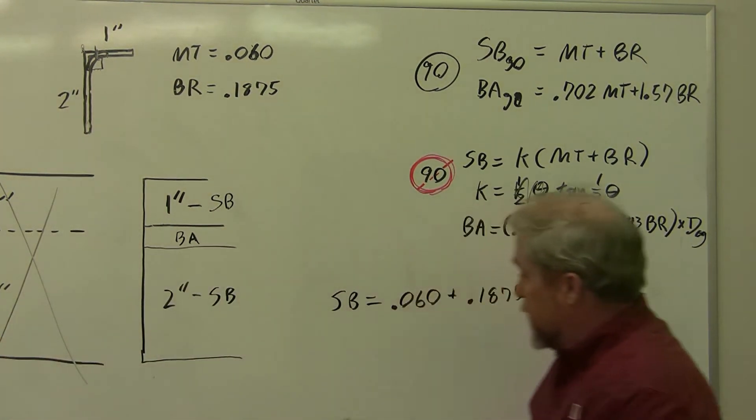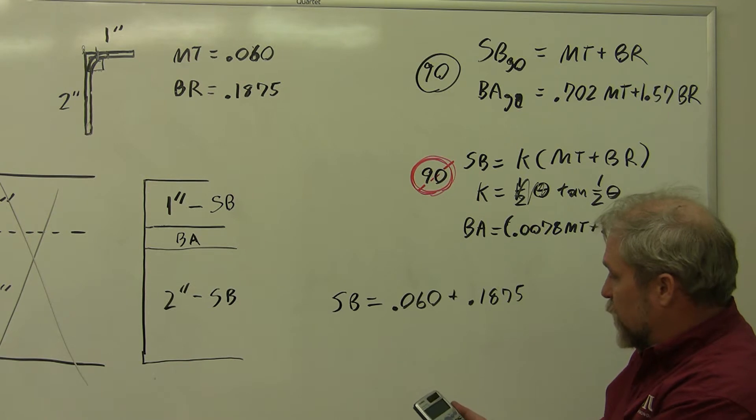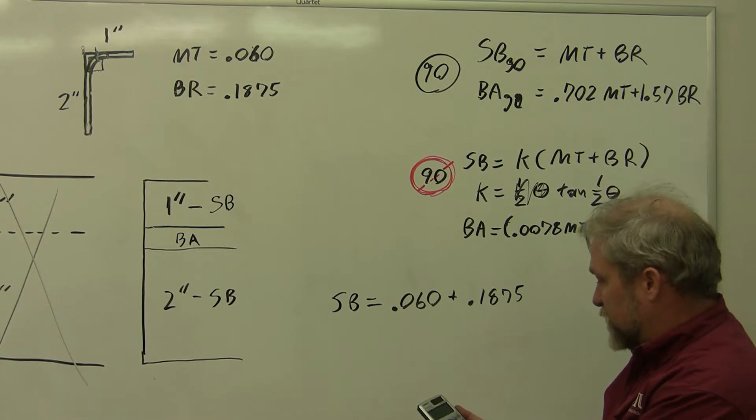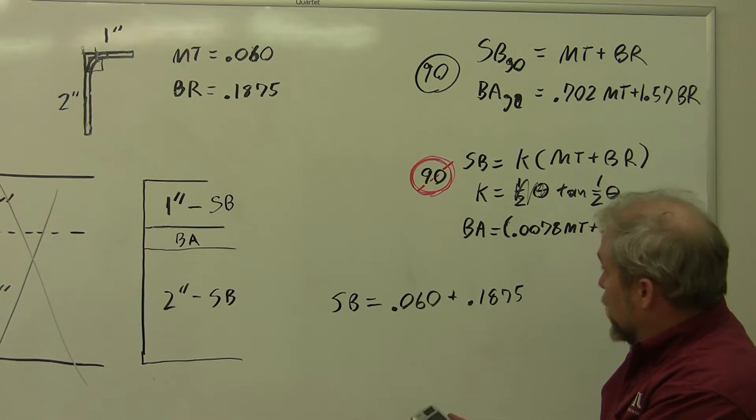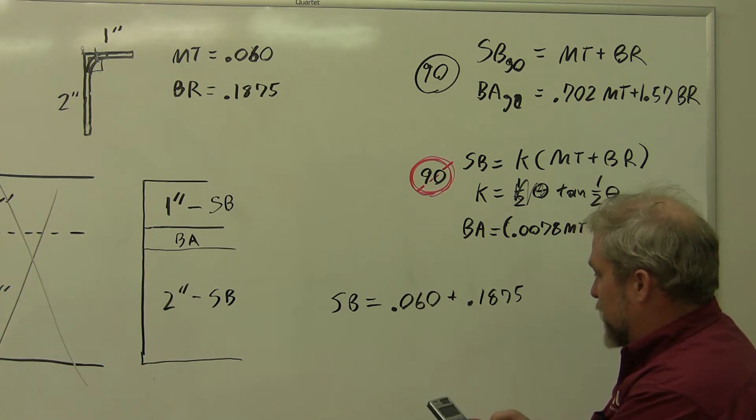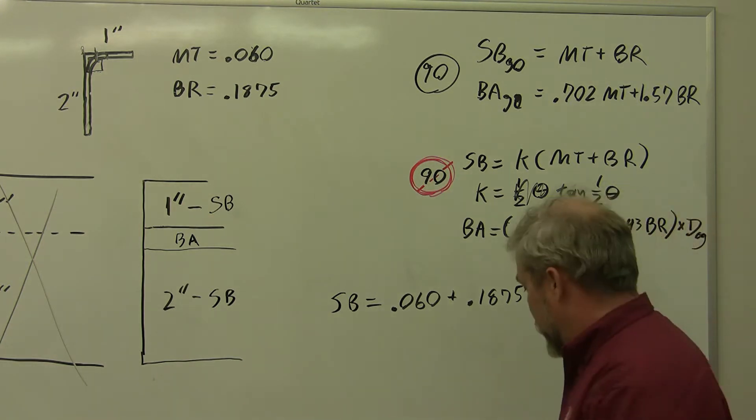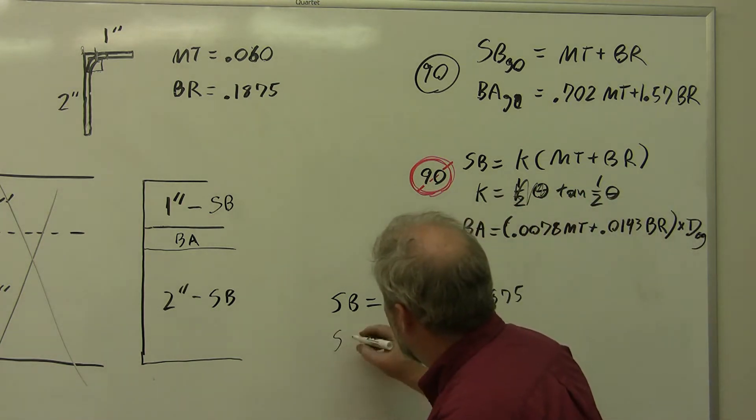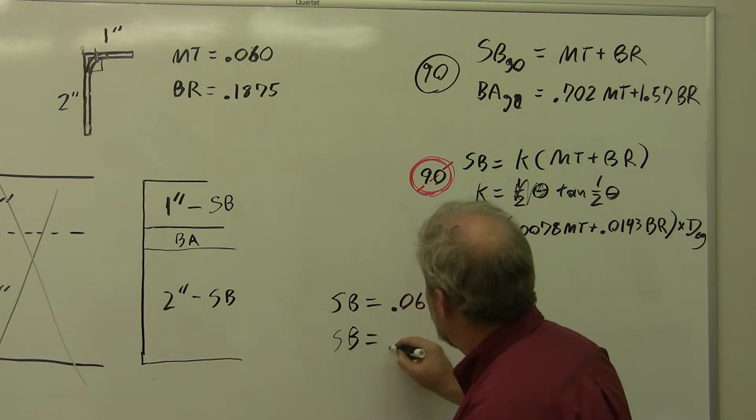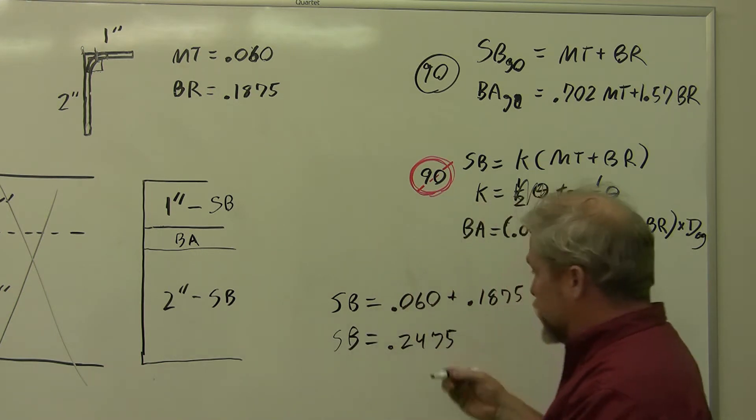Now luckily, we have these little calculator boxes that help us when we aren't so good with math ourselves. I enter the 60 thousandths plus the 0.1875 and I get 0.2475. Our setback equals 0.2475 inches.